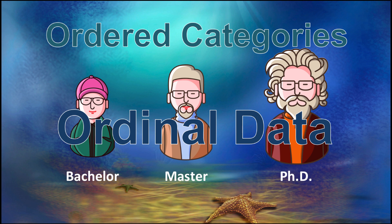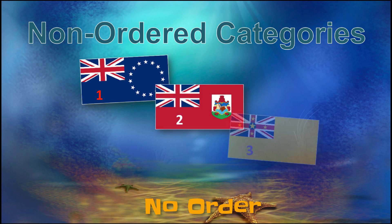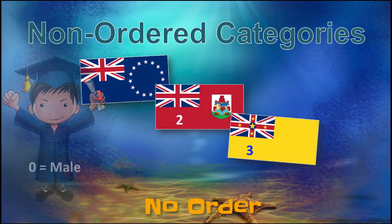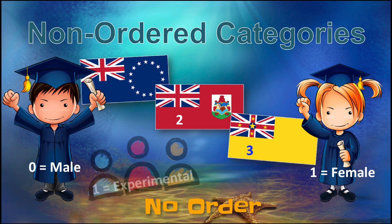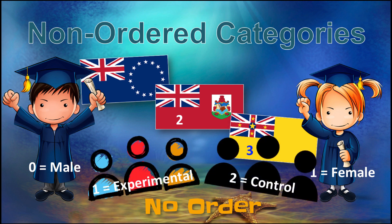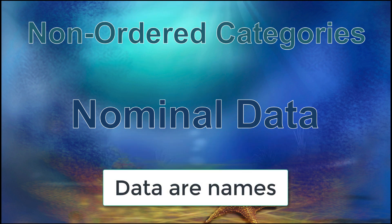But if the categories are just groups with no underlying order, such as blue team, red team, yellow team, or male, female, or experimental versus control groups, then a number representing that category is nothing more than a name. And so we call it nominal data.